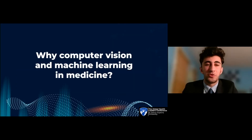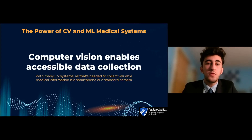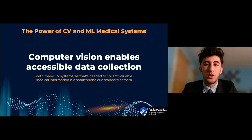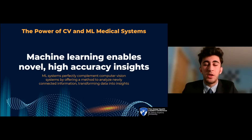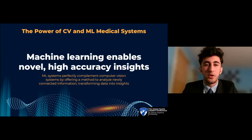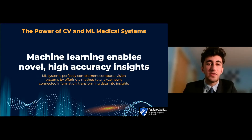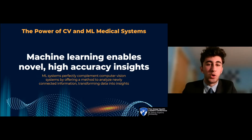So why computer vision and machine learning in medicine? Computer vision enables incredibly accessible data collection, since all you need is just a smartphone or another standard camera. These systems can be set up at home or in office and come at little to no additional cost. Computer vision also produces a great amount of data, and machine learning enables the use of this information for new and highly accurate insights. For example, data extracted by computer vision — like coordinates of movement — can be used by machine learning to form a diagnosis or assess a patient's range of motion. And as computer vision systems generate more and more data, machine learning algorithms can learn and improve over time.